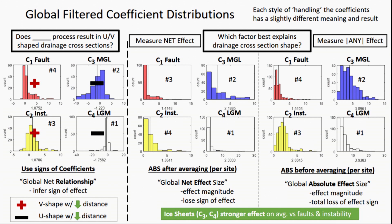This allows us to ask questions like, does blank process result in U or V-shaped drainage cross-sections? We saw with the two ice sheet extents, the MGL and the LGM, that these things had a negative relationship. That meant that as we're close to the ice sheets, we're seeing more U-shaped cross profiles in our channels.